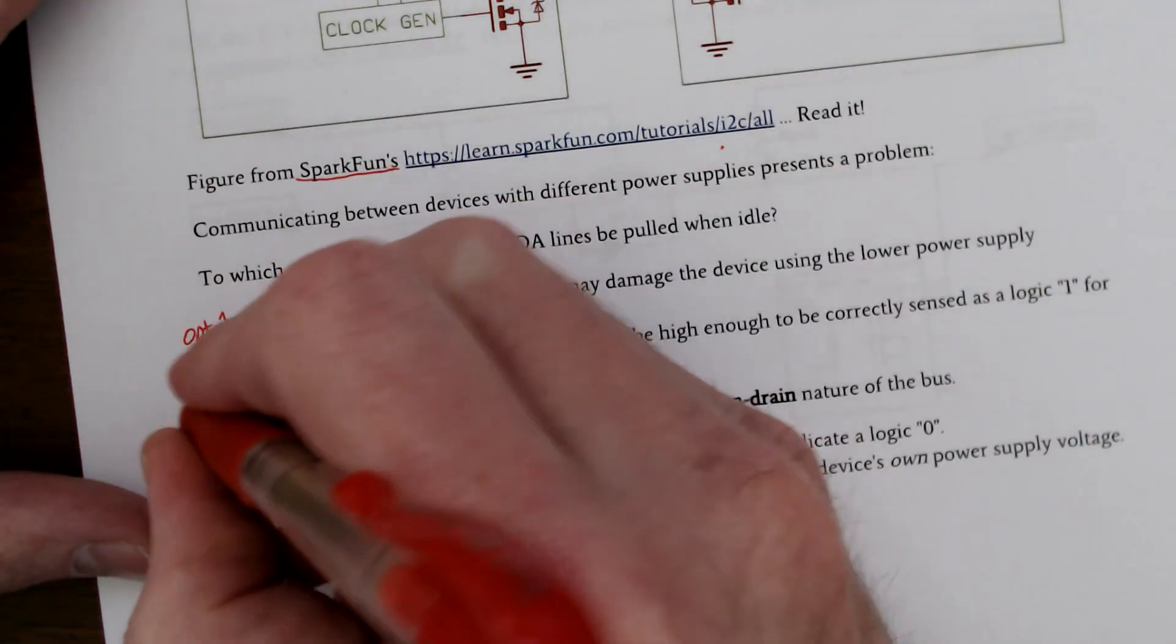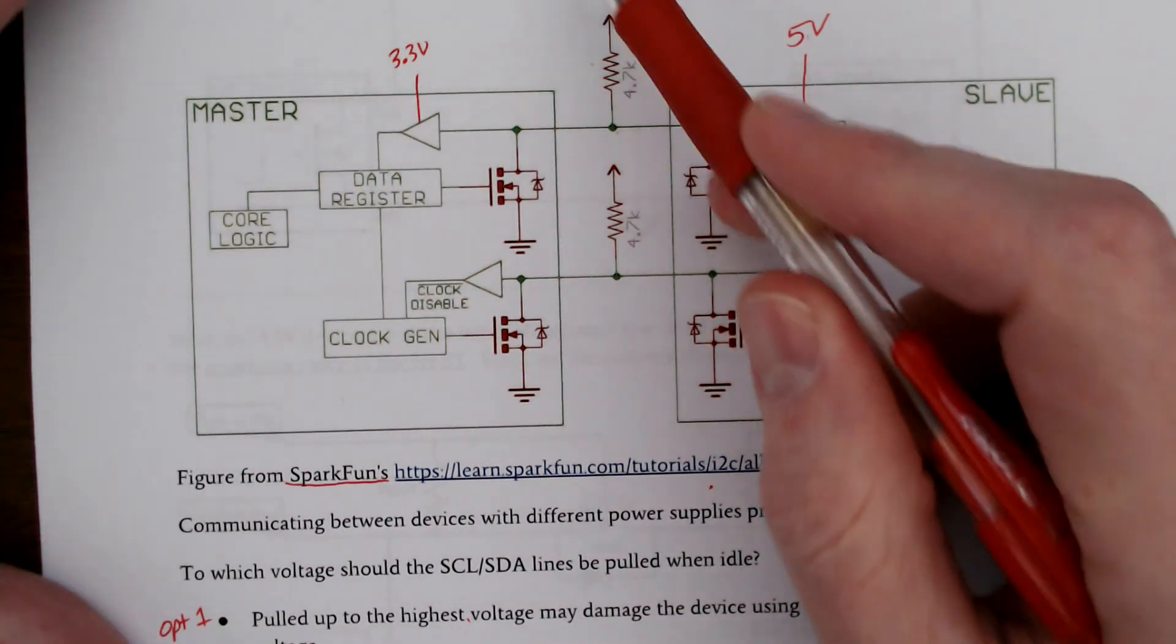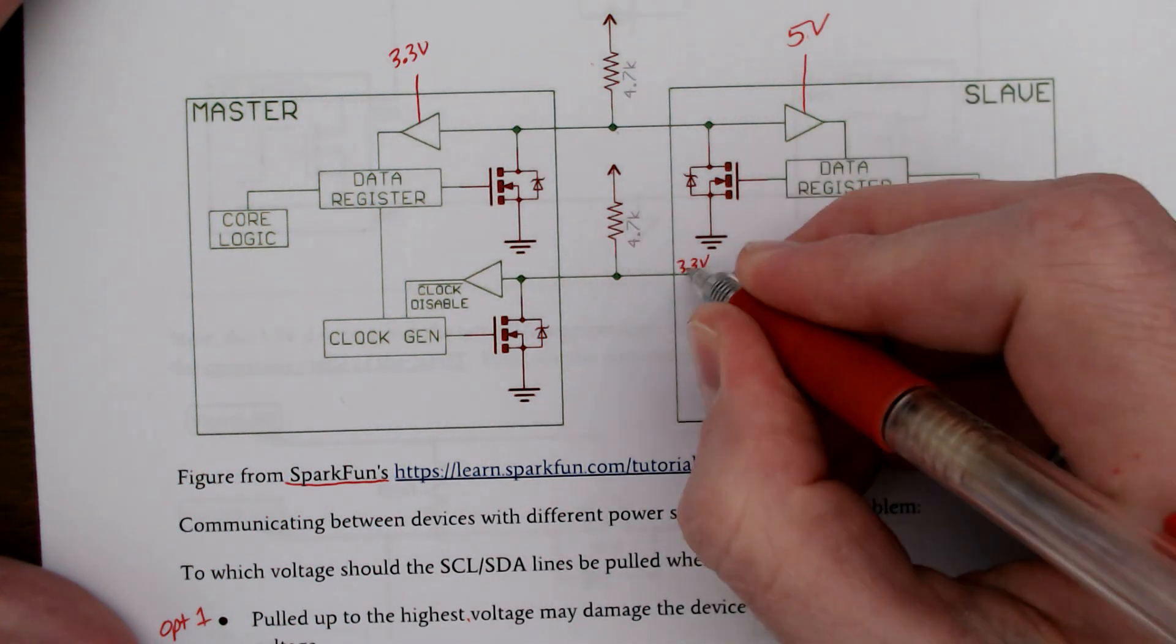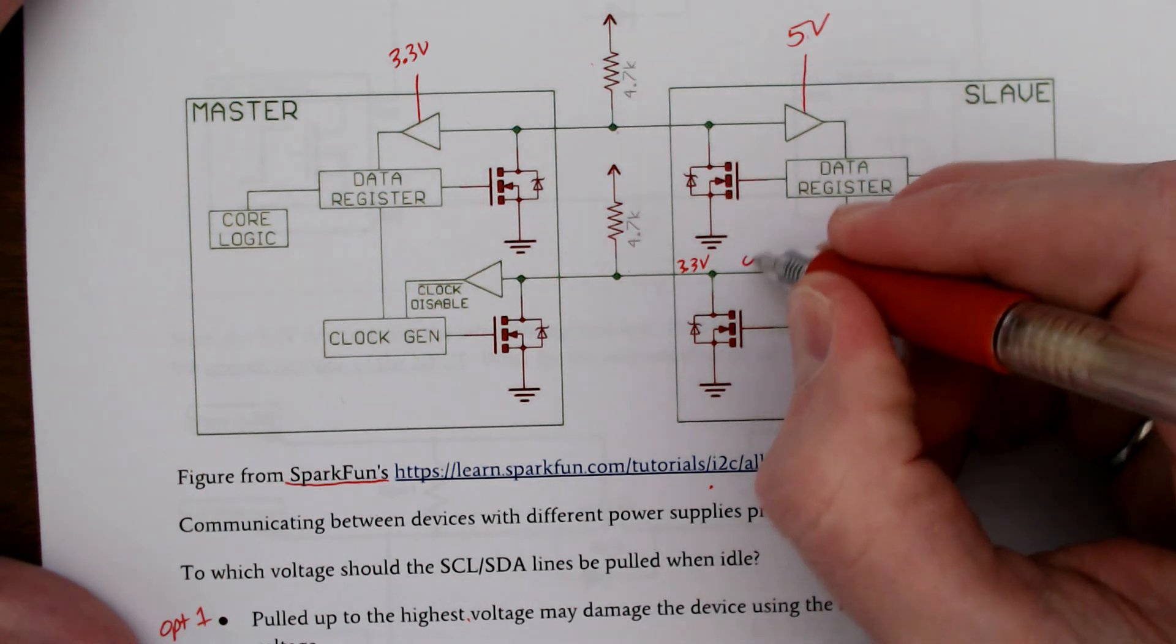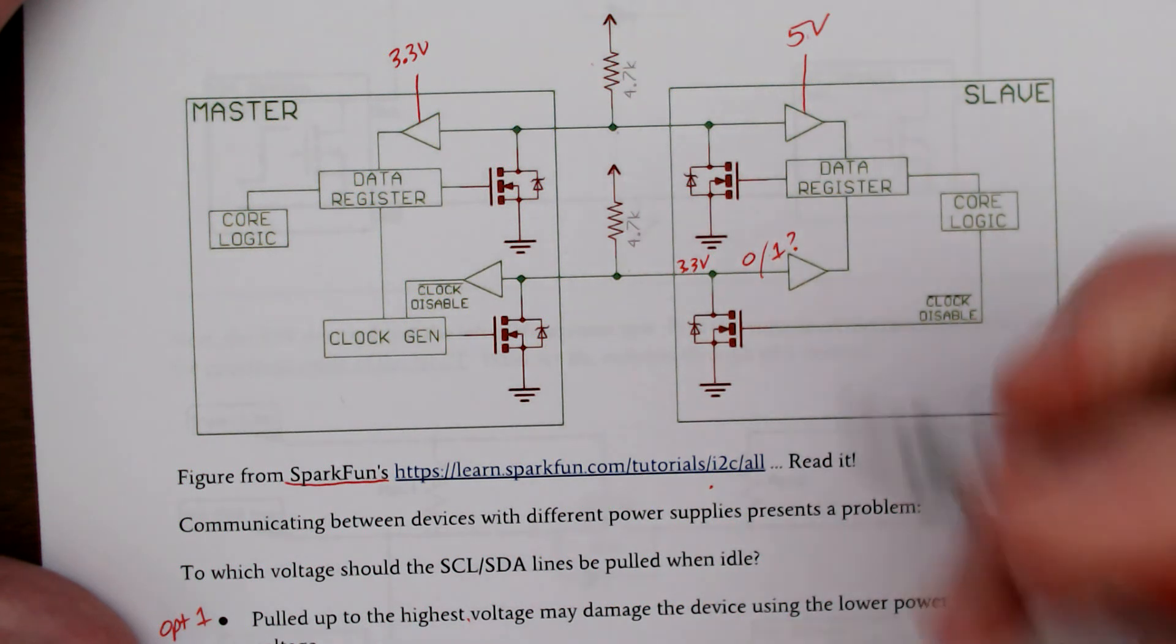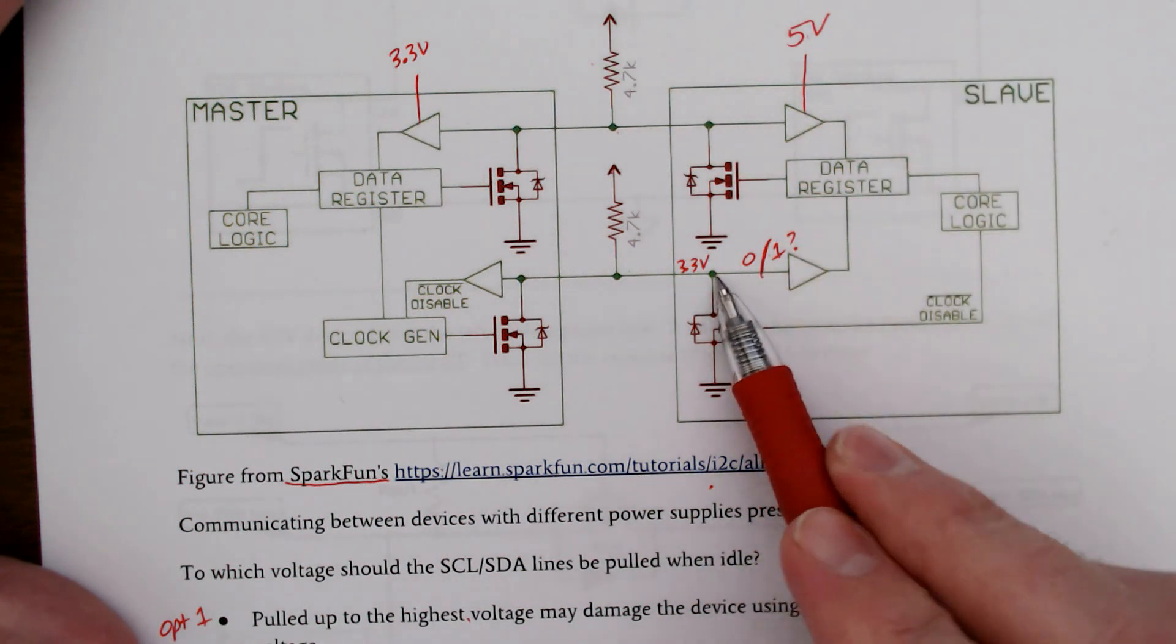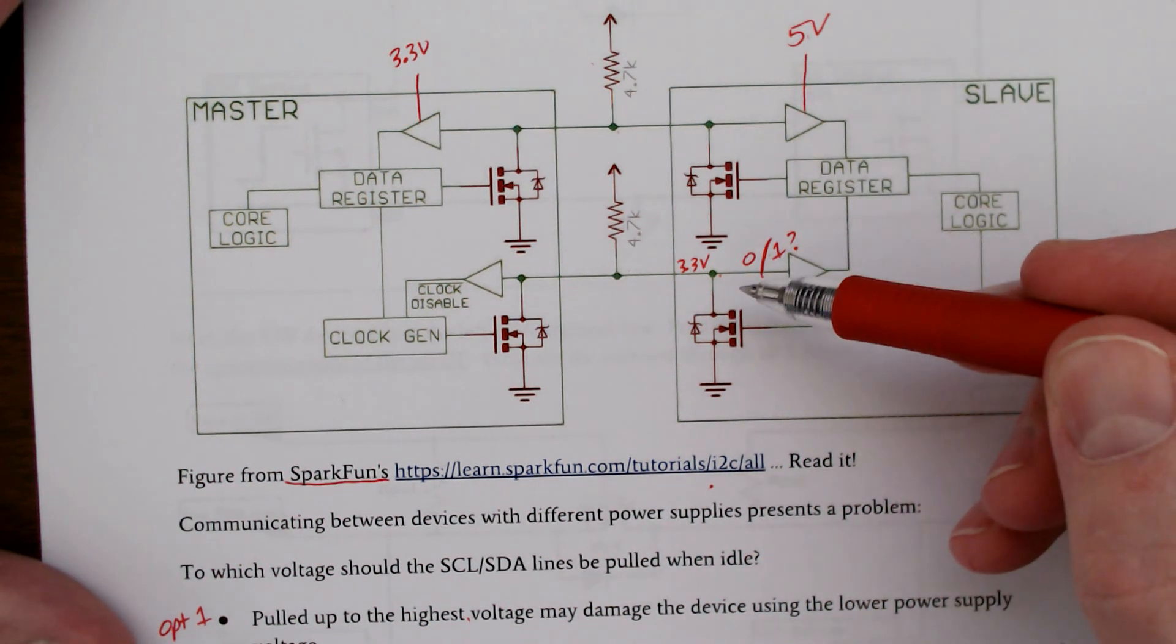Option number two, you could pull up this node or both of these nodes to 3.3 volts, except now we have 3.3 volts pulled up to here except this is a 5 volt device. Is this a 0 or is it a 1? I don't know. Sometimes we're told in the datasheet, but in general I want to pull this node all the way up to 5 so that there's no ambiguity whether this is a 0 or a 1.